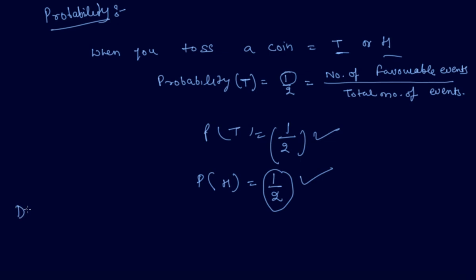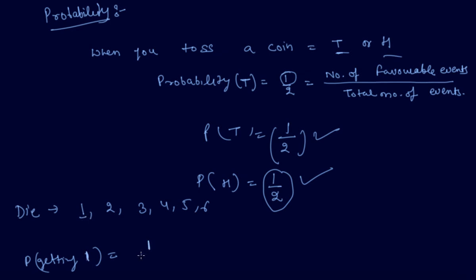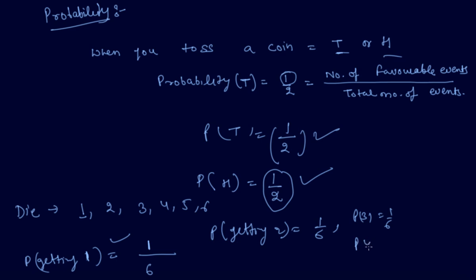Let me give you one more example with a die. When you roll a die, you can get 1, 2, 3, 4, 5, or 6. The probability of getting 1 is: number of favourable events for 1 is 1, and total number of events are 6, so probability of getting 1 is 1/6. Similarly, probability of getting 2 is 1/6, probability of 3 is 1/6, probability of 4 is 1/6, probability of 5 is 1/6, and probability of 6 is also 1/6.